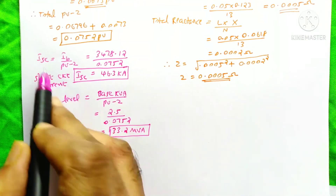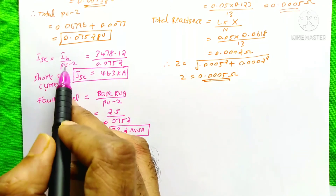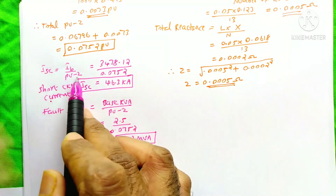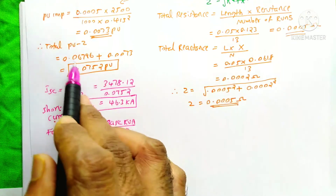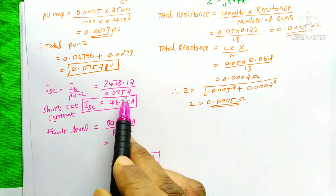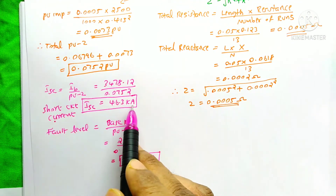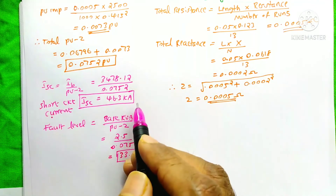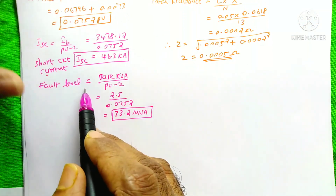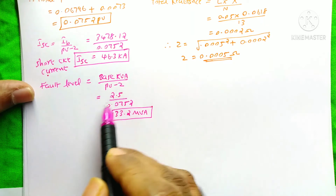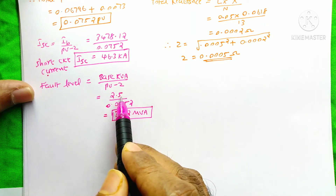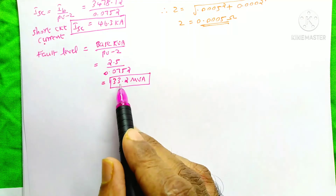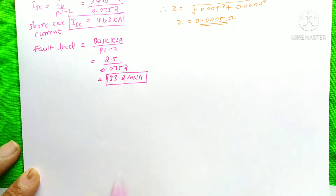Now calculating the short circuit current at the LV panel: ISC equals IB divided by per unit impedance. IB has no change, divided by the total per unit impedance of 0.0752. The answer is 46.3 kilo Amps short circuit current at the LV panel. The fault level is base kVA divided by per unit impedance: 2.5 MVA divided by 0.0752, giving 33.2 MVA.